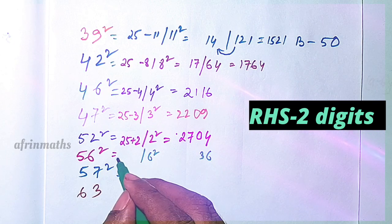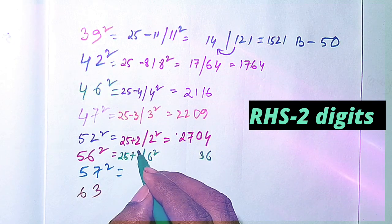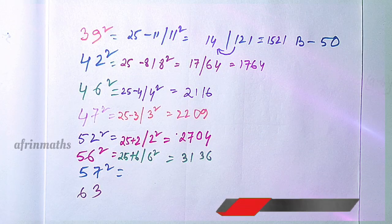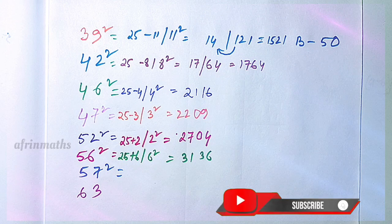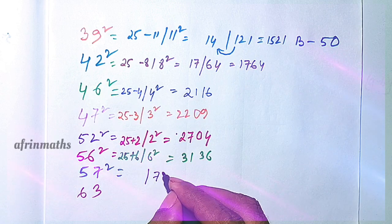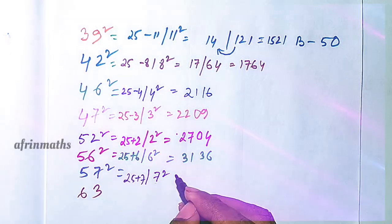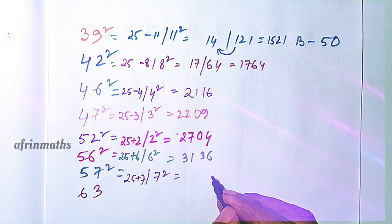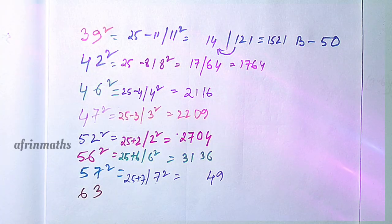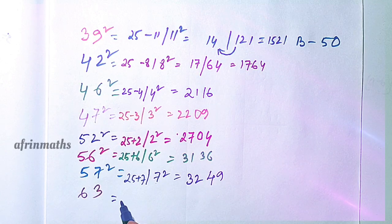Now 56 squared — it is 6 away from 50. 6 squared is 36, and 25 plus 6 is 31. So the square of 56 is 3136. For 57 squared, 7 squared is 49, and 25 plus 7 is 32, giving 3249.